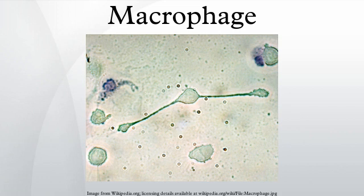Macrophages, sometimes called macrophagocytes, are cells produced by the differentiation of monocytes in tissues. Macrophages were discovered by Elia Mechnikov, a Russian bacteriologist, in 1884. Human macrophages are about 21 micrometers in diameter.